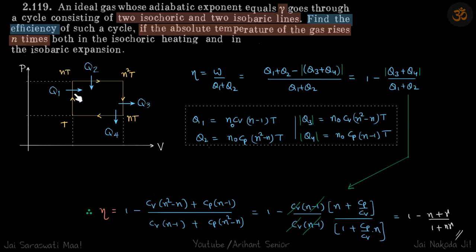Work done is Δq, which is q1 plus q2 minus q3 plus q4. That is w divided by q1 plus q2, so we can write this as 1 minus (q3 plus q4)/(q1 plus q2). Now we just need to find the values of q3, q4, q1, and q2.